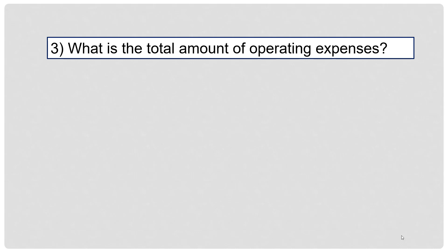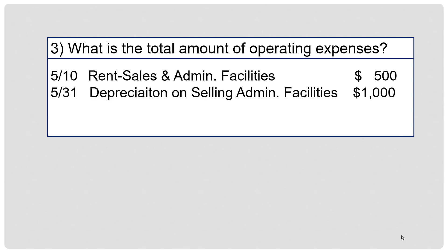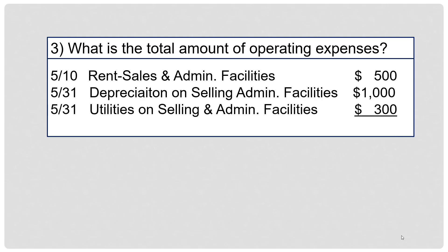Question 3: what is the total amount of operating expenses? This is another name for period costs. Reading through the transactions, you find rent on selling and administrative facilities of $500 on May 10, depreciation on selling and administrative facilities of $1,000 on May 31, and utilities on selling and administrative facilities of $300 on May 31. Only three transactions were operating expenses, totaling $1,800.